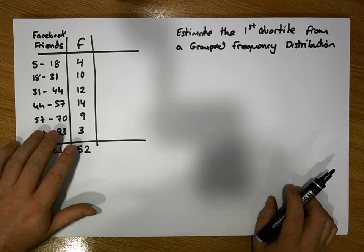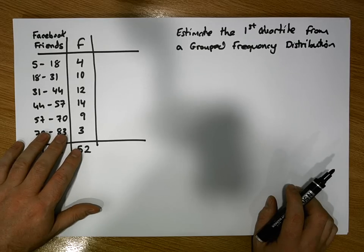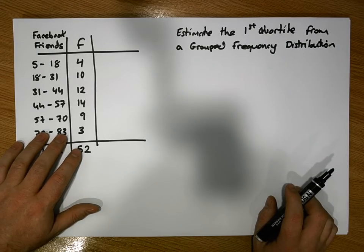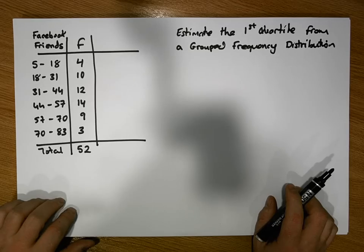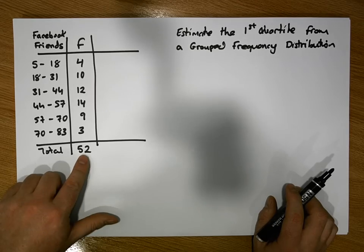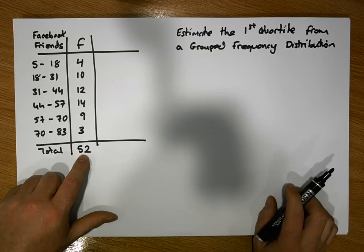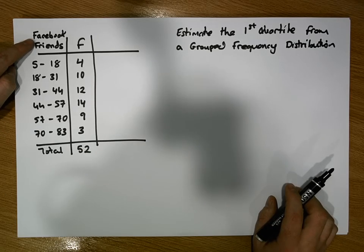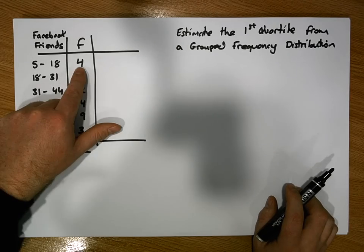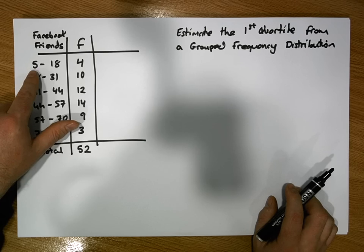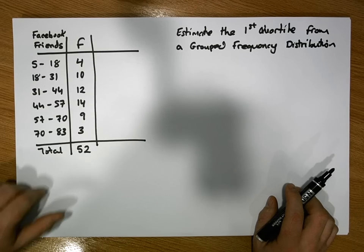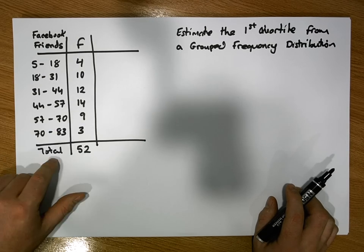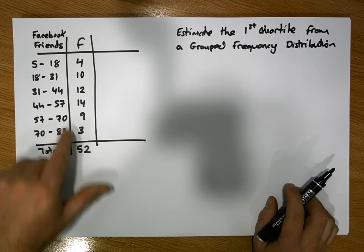The grouped frequency distribution we'll be using for this video is one we've used in a number of previous videos. It represents the results of a survey of 52 respondents, each asked how many Facebook friends they had. For example, four respondents had a value between 5 and 18, ten between 18 and 31, and so on.